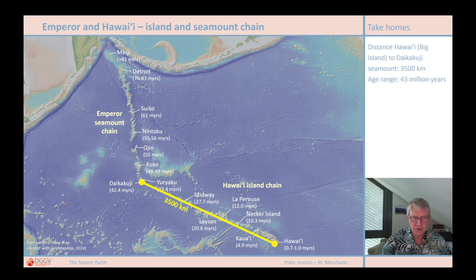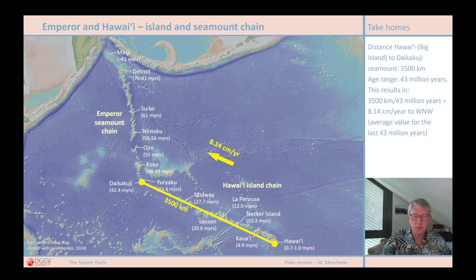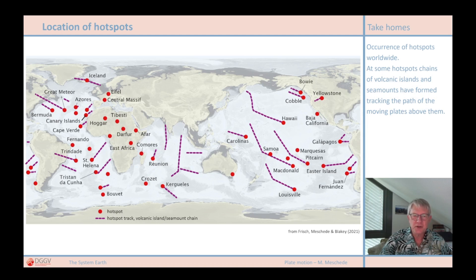From the active volcanoes on Big Island to the Daikakuchi Seamount, we have a distance of more or less 3,500 kilometers. The Daikakuchi Seamount was at the position where Big Island is today about 43 million years ago. So the plate has traveled 3,500 kilometers in 43 million years. A simple rule of three calculation gives us the average velocity of the Pacific plate during this period: 8.14 centimeters per year. We have a whole series of such volcanic chains on Earth for determining absolute plate movements. On the Pacific plate, volcanic chains from the McDonald Seamounts and the Pitcairn Islands show exactly the same kink as the Hawaii-Emperor chain, because they lie on the same plate and represent a change in plate motion direction.